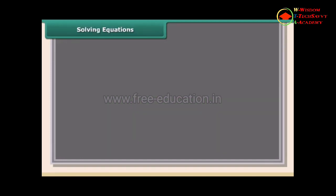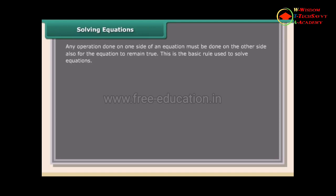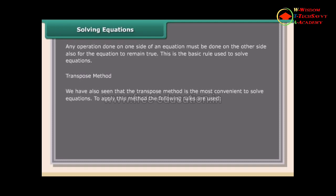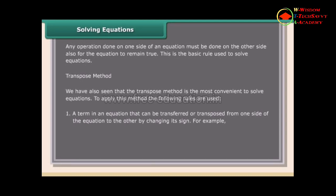Any operation done on one side of an equation must be done on the other side also for the equation to remain true. This is the basic rule used to solve equations. Using the transpose method: a term in an equation can be transferred from one side to the other by changing its sign. For example, if x - 12 = 5, then x = 5 + 12; if x + 1 = -2x, then x + 2x = -1.